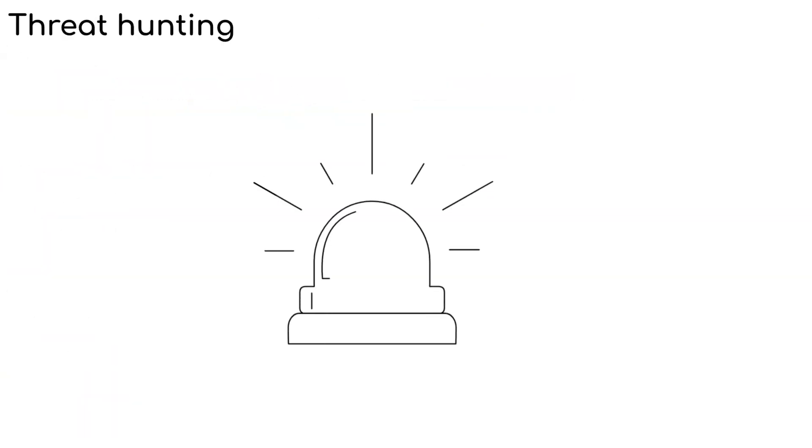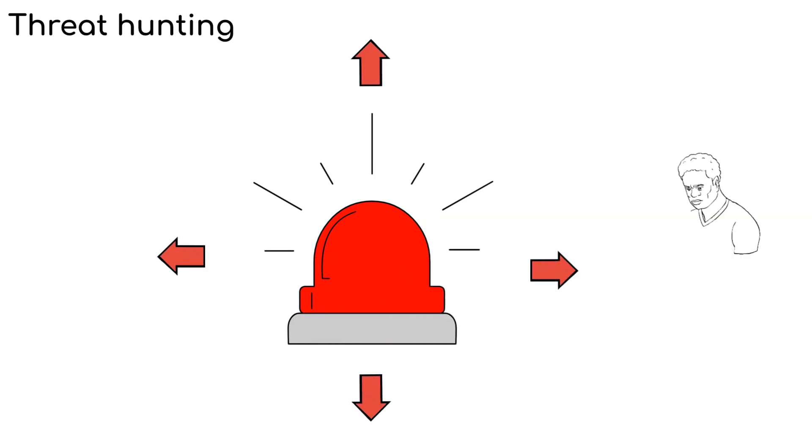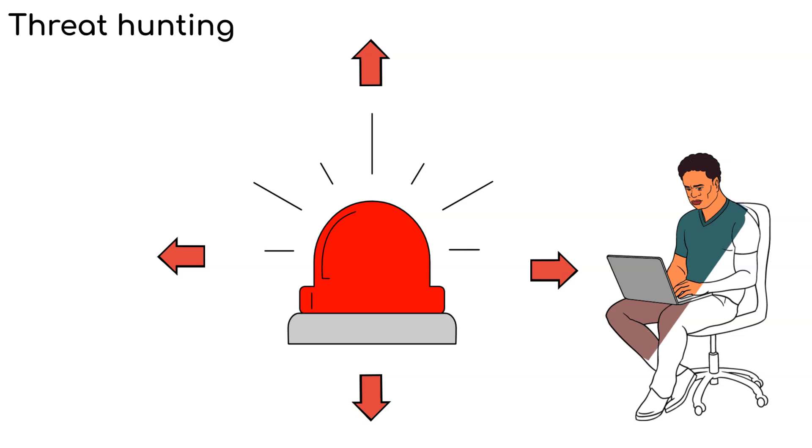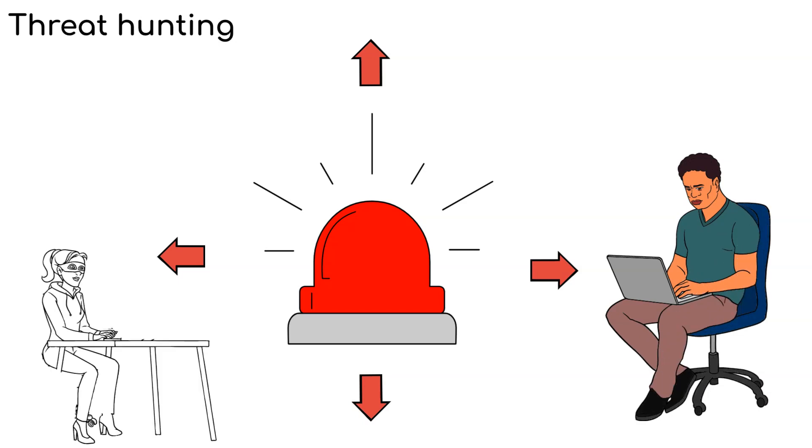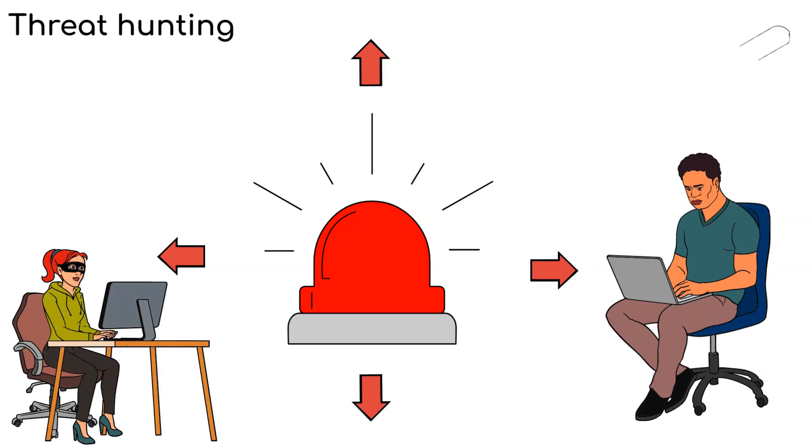Instead of waiting for alarms to go off when something bad happens, threat hunters actively look for clues and signs that might show a cyber intruder is trying to get in. They use special tools and their knowledge to search for anything unusual like footprints in the snow.